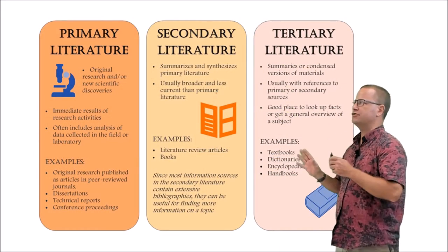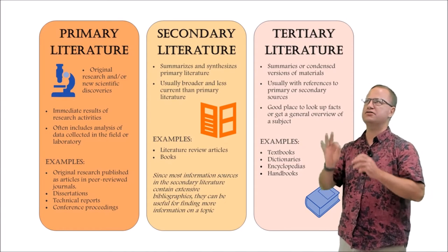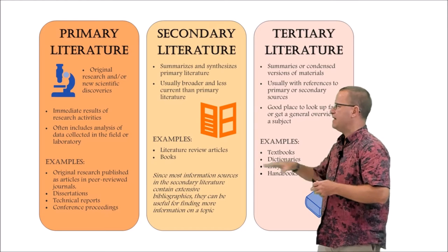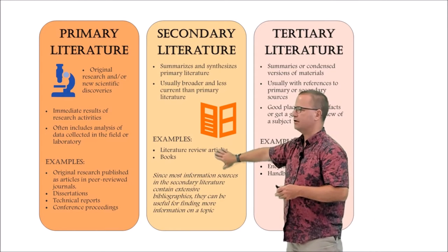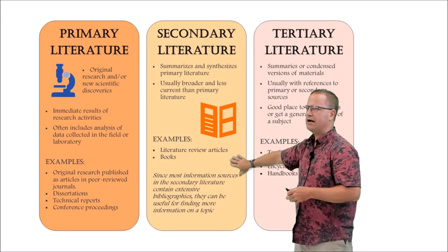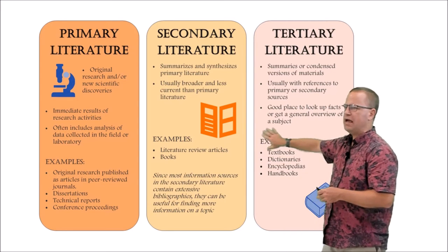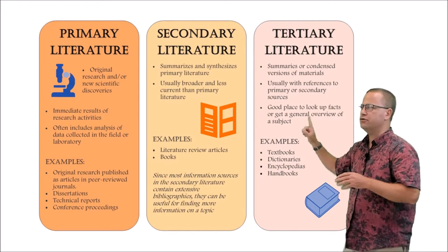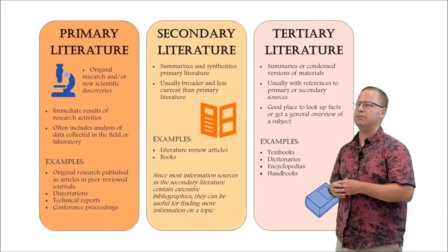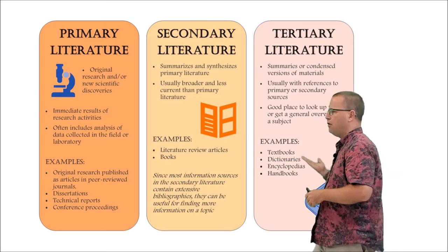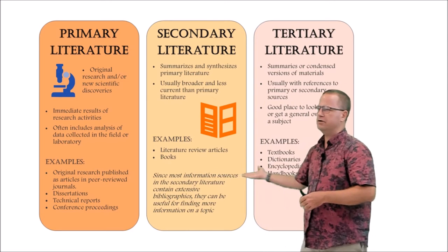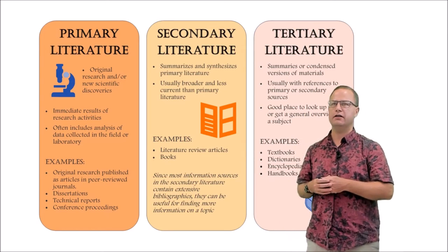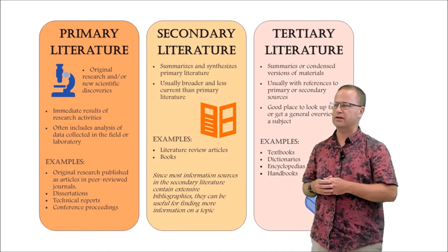So, primary literature is where scientists publish their initial findings from experiments. That can be distilled into secondary literature, like monographs and reviews. Then we have tertiary literature — as a student, this is probably where you're reading. Your textbook is a good example of tertiary literature. All three types can be good references, but most likely you'll be consulting tertiary literature when looking up information for class.